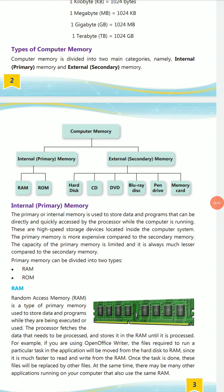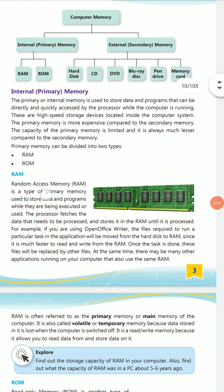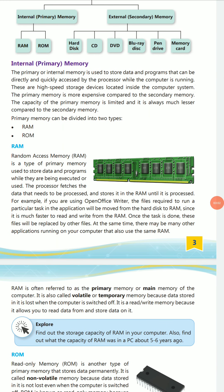Computer memory is broadly divided into two types: internal memory, also called primary memory, and external memory, also called secondary memory. Primary memory stores data and programs that can be directly and quickly accessed by the processor while the computer is running, without any interruption. These are high-speed storage devices located inside the computer system.